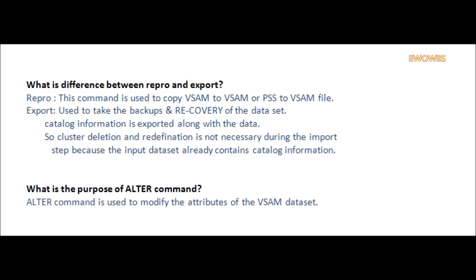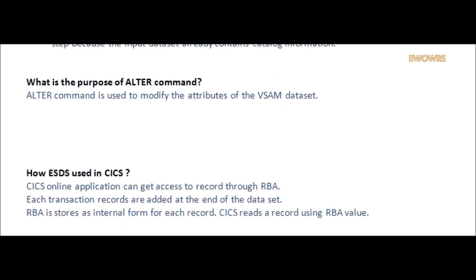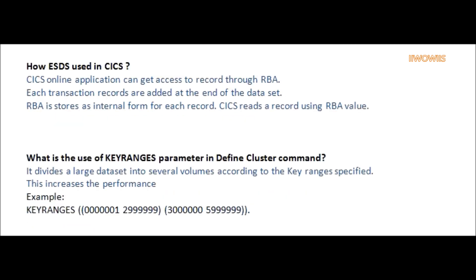Question: What is the purpose of the ALTER command? Answer: ALTER command is used to modify the attributes of the VSAM data set. Question: How is ESDS used in CICS?